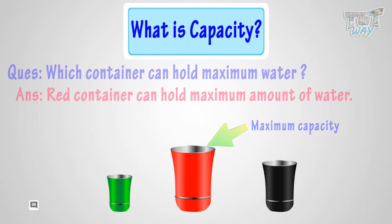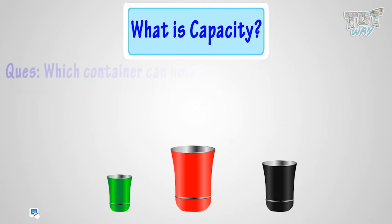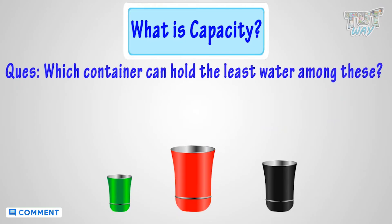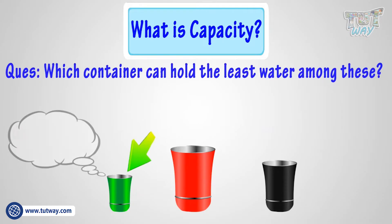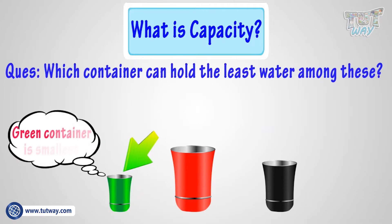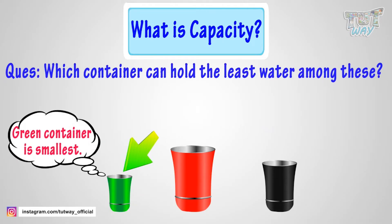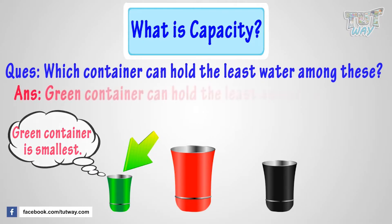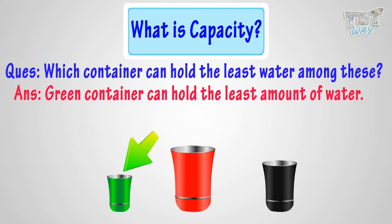Now, which container can hold the least water among these? The green container is smallest, so it can hold the least amount of water. So, the green container has the least capacity among all the containers.